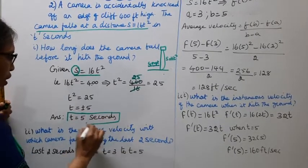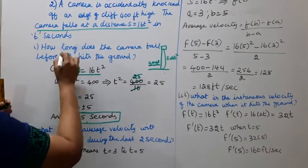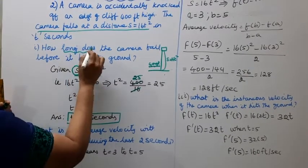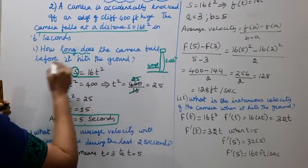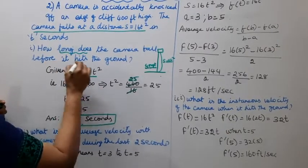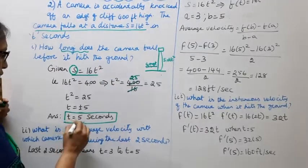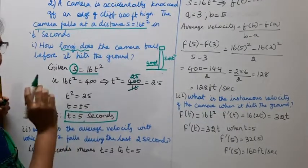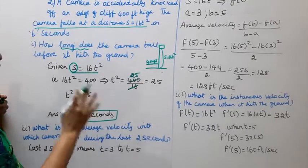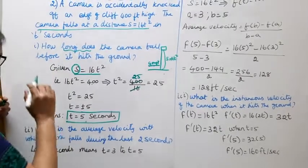How long does the camera fall before it hits the ground? T equals 5 seconds. That is the answer for the first sub-question.